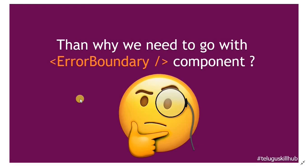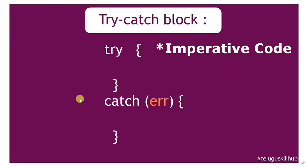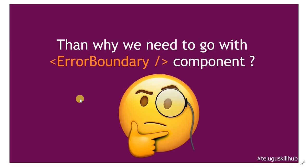For example, if we have React Router DOM version 5 or React Router DOM version 6, we are going to use the Error Boundary Component. We have an option called Error Boundaries. If you use a try-catch block, it is completely imperative coding. But the Error Boundary is a declarative kind of coding.